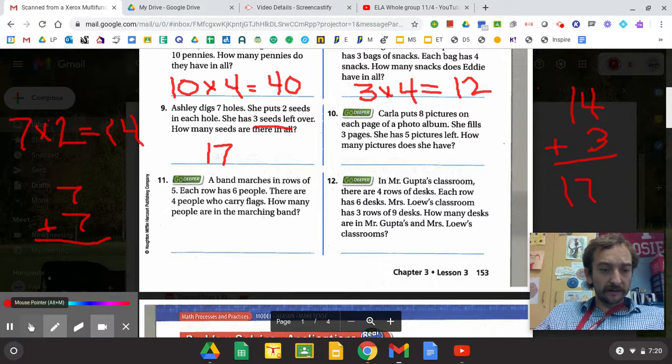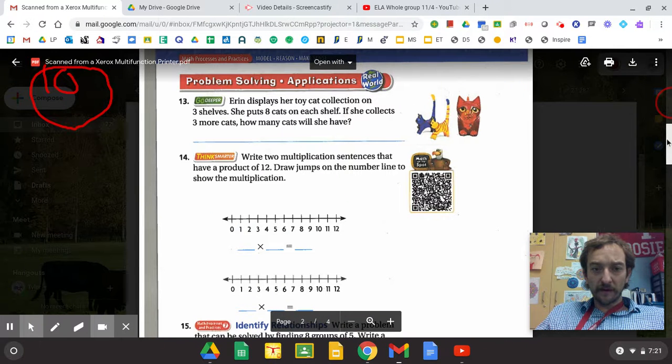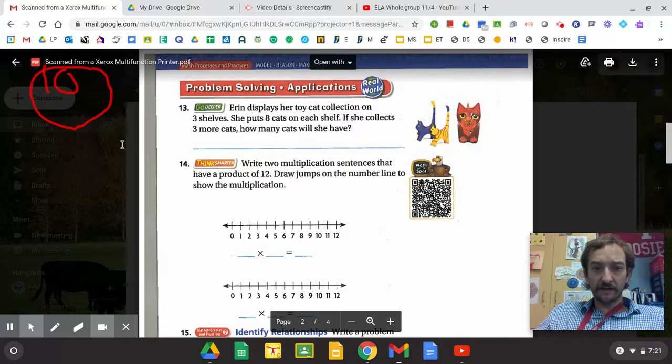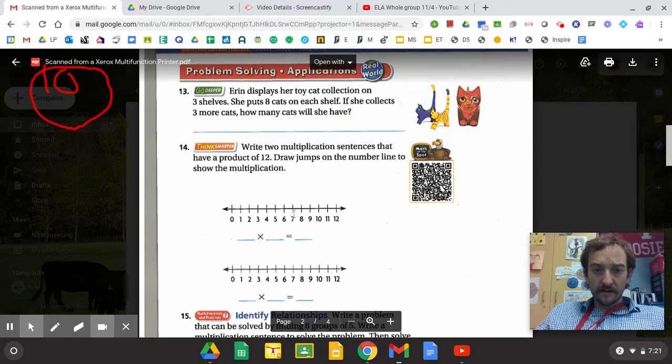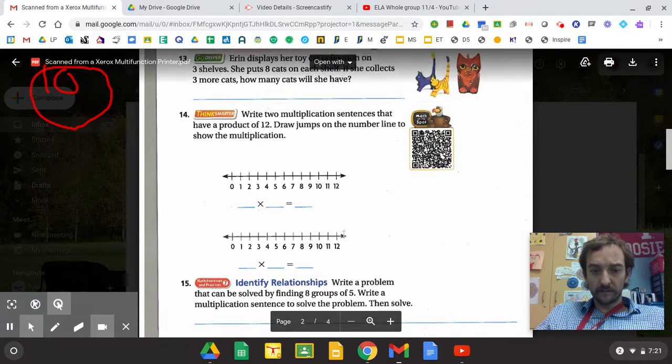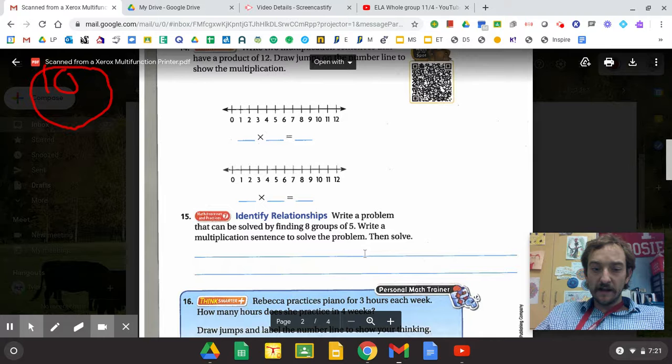Okay. Let's look at the rest of this. So you're going to do these practice problems here. So this is three shelves of eight. Three times eight. So here you're trying to make 12 with multiplication problems. So how can you do even jumps to get to 12? Two different ways. So I would look at twos. I would look at threes. I would look at fours.